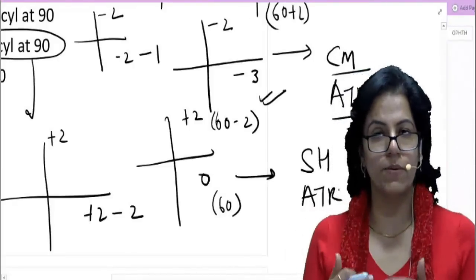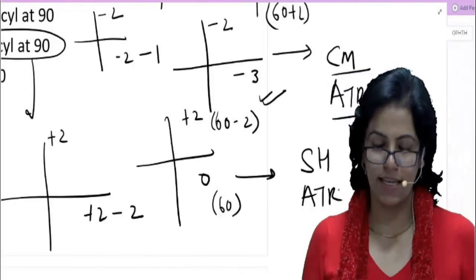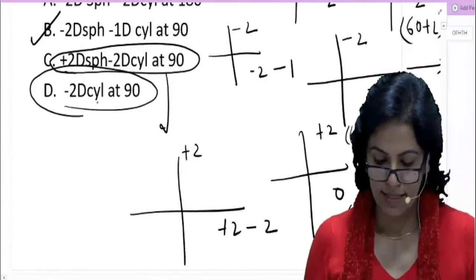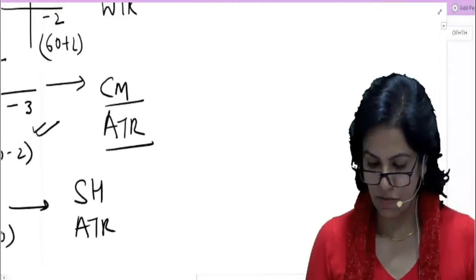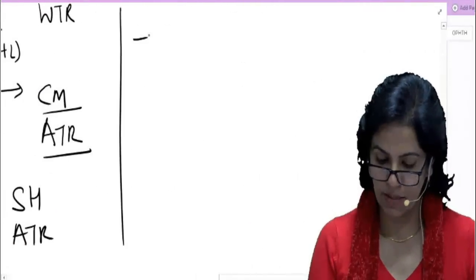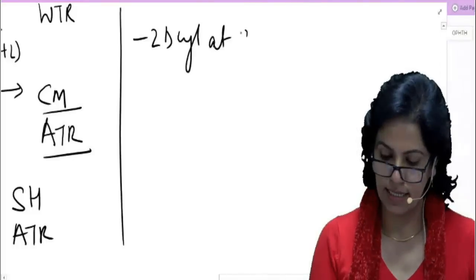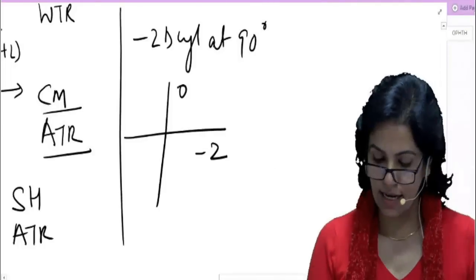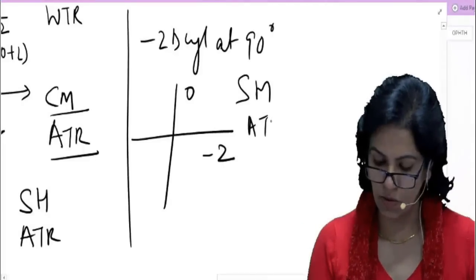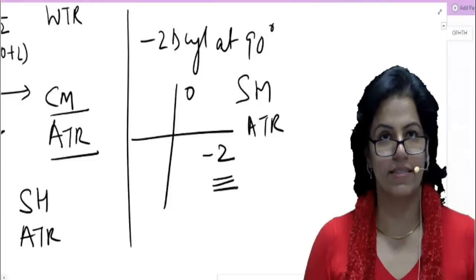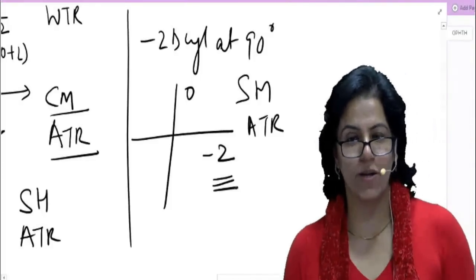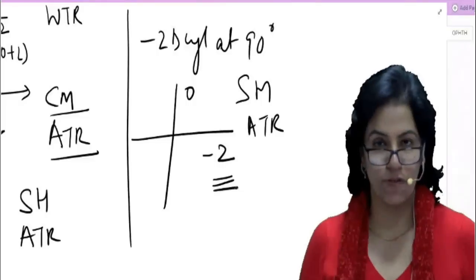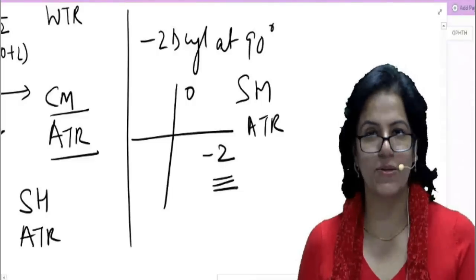Option D: minus two diopters cylinder at 90. Cylinder at 90 means minus two is placed at 90 degrees, and 180 becomes zero. Retinoscopic reading is minus two and zero. This is simple myopic astigmatism. Power is more in the minus axis at 90, so it is against-the-rule. But it is not compound myopic — so not the answer either. The correct answer is Option B. I hope this is very clear — no more fears about with-the-rule and against-the-rule astigmatism.